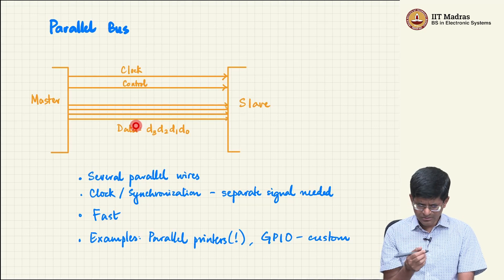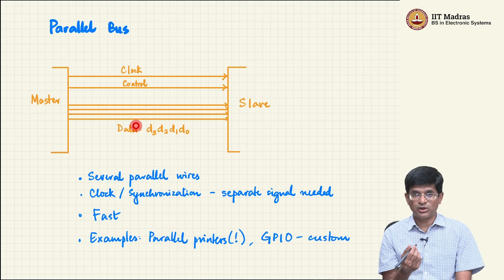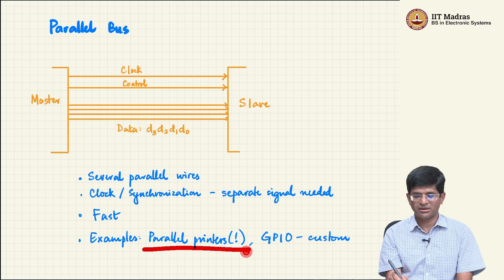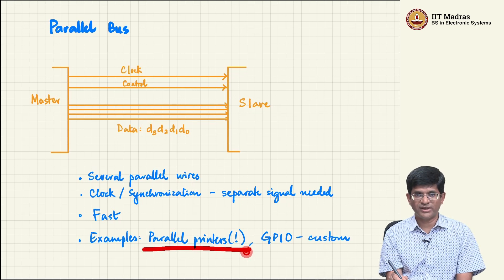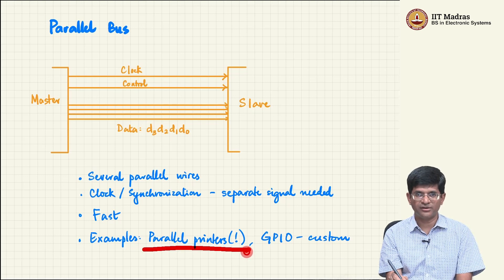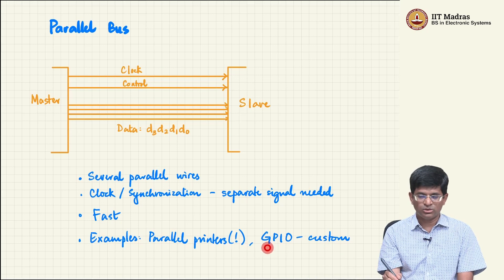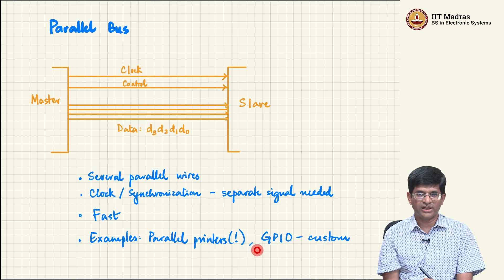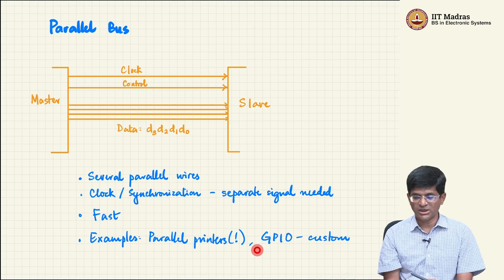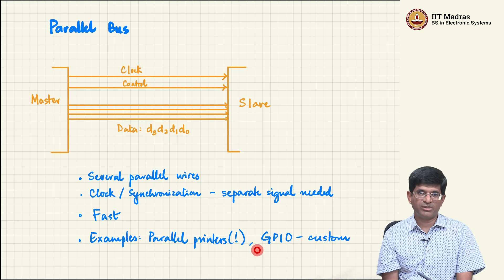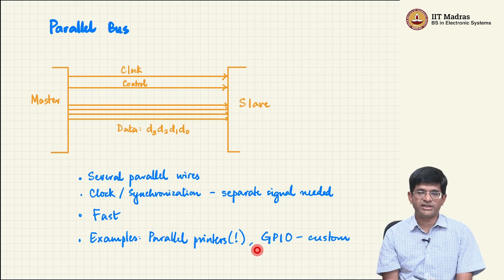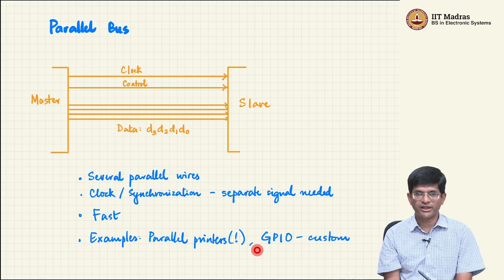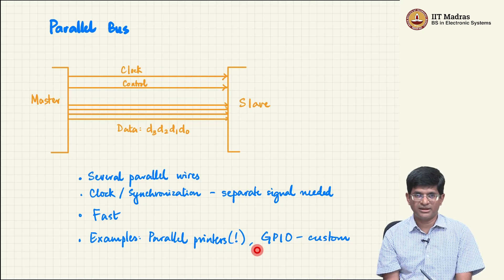An example of such parallel communication used to exist in the context of parallel printers, but I think nowadays you will probably find it hard to even find the parallel printer interface. They are mostly obsolete at this point. But on the other hand there are contexts in which people might use parallel communication and mostly what happens over here is you create your own custom communication protocol by using the GPIO pins that are there.